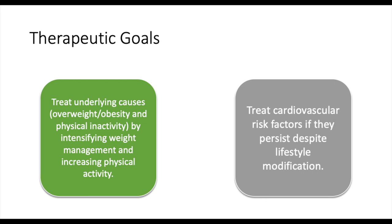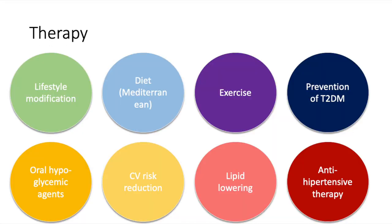So, what about therapy? There are two main goals in metabolic syndrome therapy: treating the underlying causes by intensifying weight management and increasing physical activity, and treating cardiovascular risk factors if they persist despite lifestyle modification. Lifestyle modifications are focused on weight reduction and increased physical activity. It is recommended that patients adopt a Mediterranean diet high in fruits, vegetables, nuts, whole grains, and olive oil, with a low-fat, low-salt diet limited to 2400 mg of sodium per day. Exercise for a daily minimum of 30 minutes of moderate intensity is also recommended. Lifestyle modifications reduce the risk of type 2 diabetes, and the use of oral hypoglycemic agents such as metformin can prevent or delay the development of diabetes. Cardiovascular risk reduction can be achieved by reversal of the metabolic syndrome, maintaining an LDL cholesterol of less than 100, and hypertension control, especially in patients with diabetes.